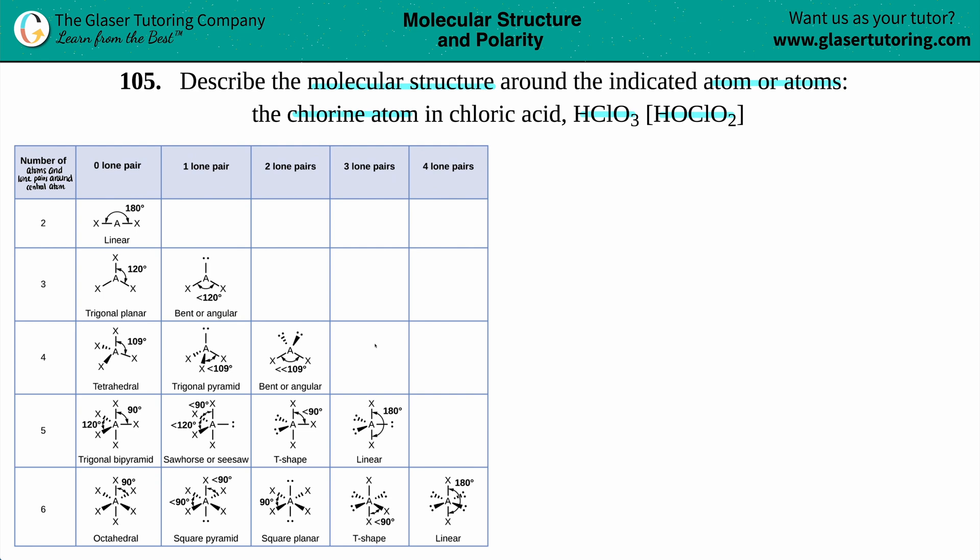If you want to figure out what type of geometry HClO3 has, the best thing to do is to draw the Lewis structure. The Lewis structure is going to tell you a lot of information, and molecular geometry or molecular structure is one of them. They do give us a little hint here as to how we're going to draw it. There's tons of videos on this channel just designated to drawing Lewis structures. This one will kind of be like a quick version.